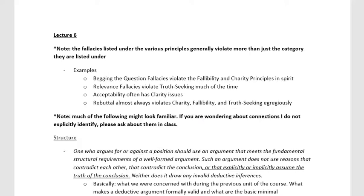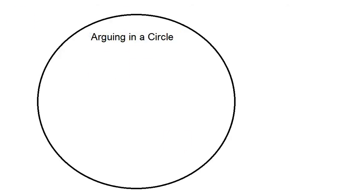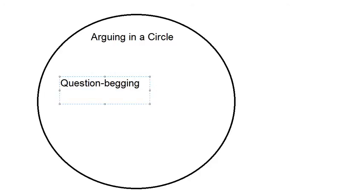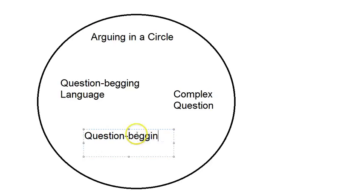As you're approaching this material, be on guard about a couple of things. First, some fallacies are organized into groups. For example, right at the beginning we'll talk about the question-begging fallacies. There's one fallacy that describes the whole family — arguing in a circle — and within that general category there are a few more types: question-begging language, complex question, and question-begging definition. On the exam there will be one problem for each, and you'll be allowed to use each answer once and only once. That's where things get more complicated.